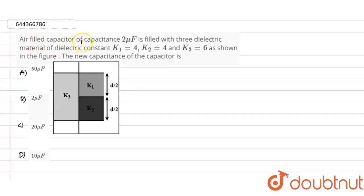It is given that an air-filled capacitor of capacitance 2 microfarads is filled with three dielectric materials of dielectric constant K1 = 4, K2 = 4, and K3 = 6 as shown in this figure. So the new capacitance of the capacitor is - here we need to find out the new value of the capacitance for the capacitor.